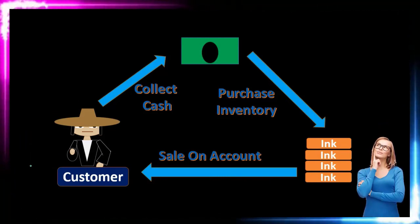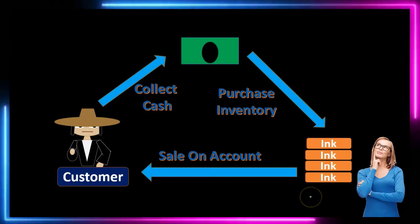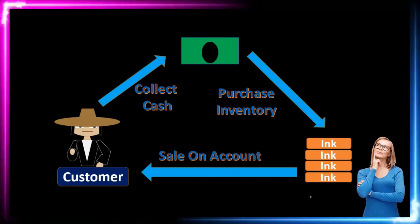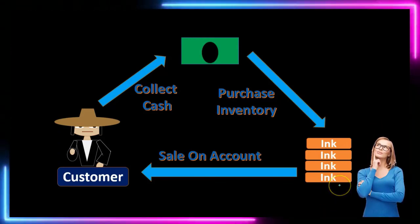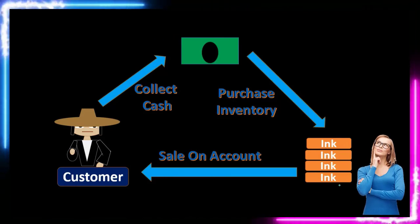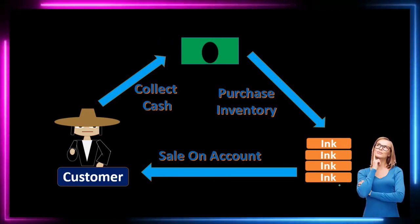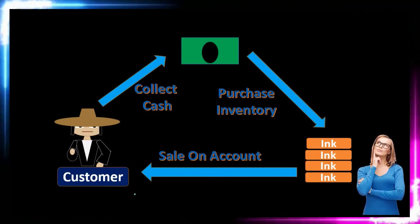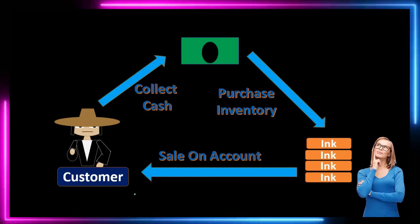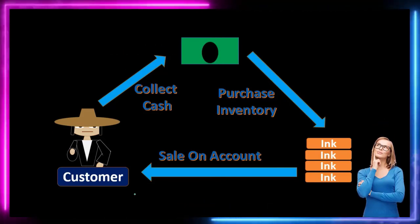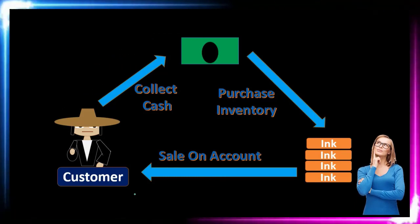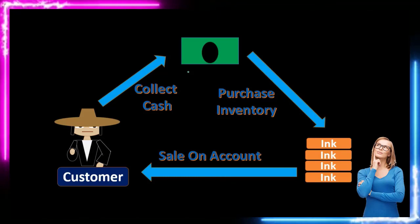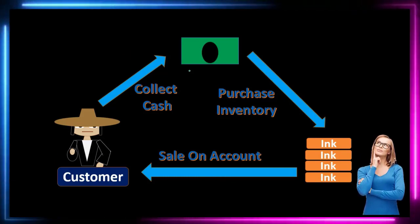The idea of this cycle is to differentiate from the service company in that we have this added factor of inventory. This process will be happening in one form or another — we purchase inventory, mark it up to generate revenue, sell it to the customer at the marked-up price, increase accounts receivable and sales, eventually collect the cash, and then have the funds to repeat the process and generate more revenue.